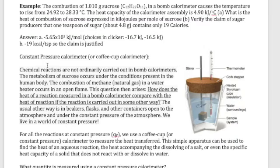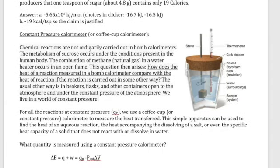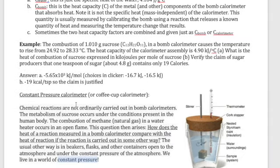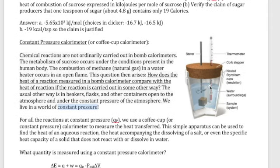Now let's look at the second type: the constant pressure calorimeter, more commonly known as the coffee cup calorimeter. Most chemical reactions don't occur under constant volume — reactions in the body, in nature, in plants and animals occur under constant pressure because the pressure inside and outside the container equilibrate. So measuring heat under constant pressure is more relevant. We set up a coffee cup calorimeter using styrofoam cups to allow pressure equilibration.